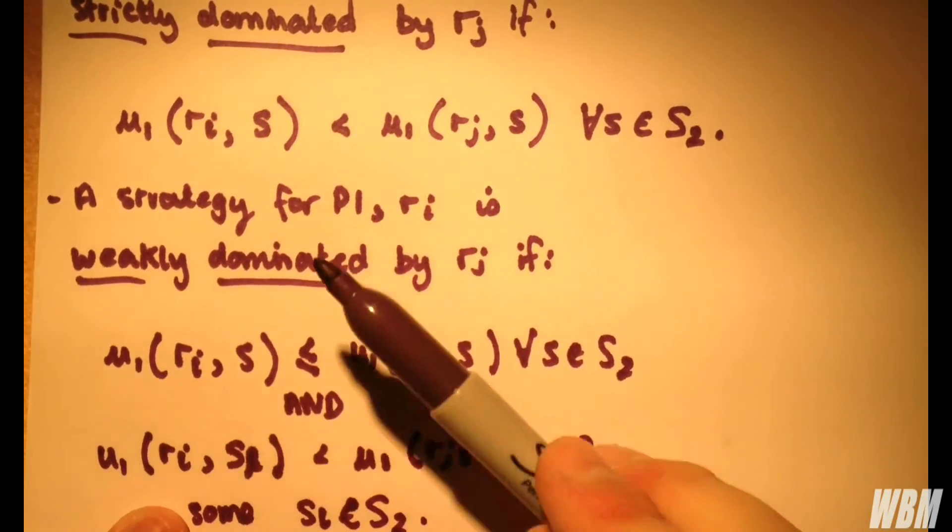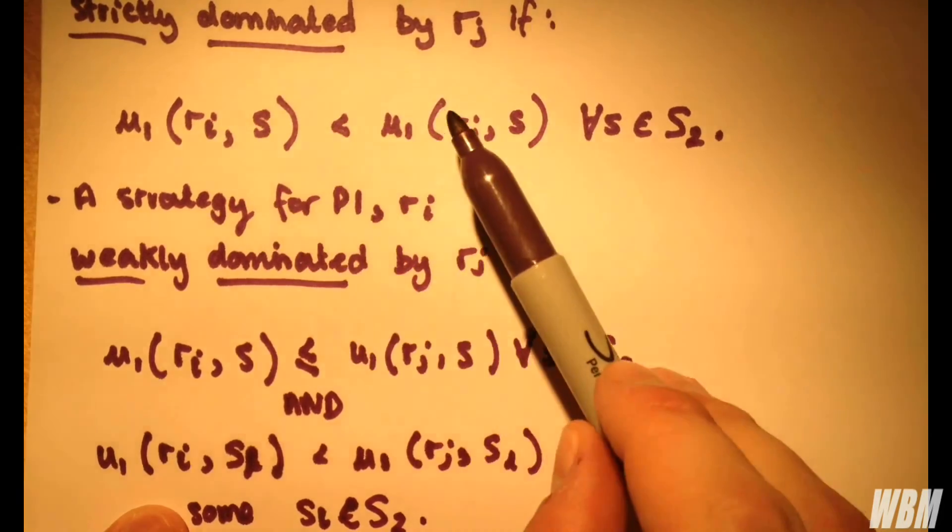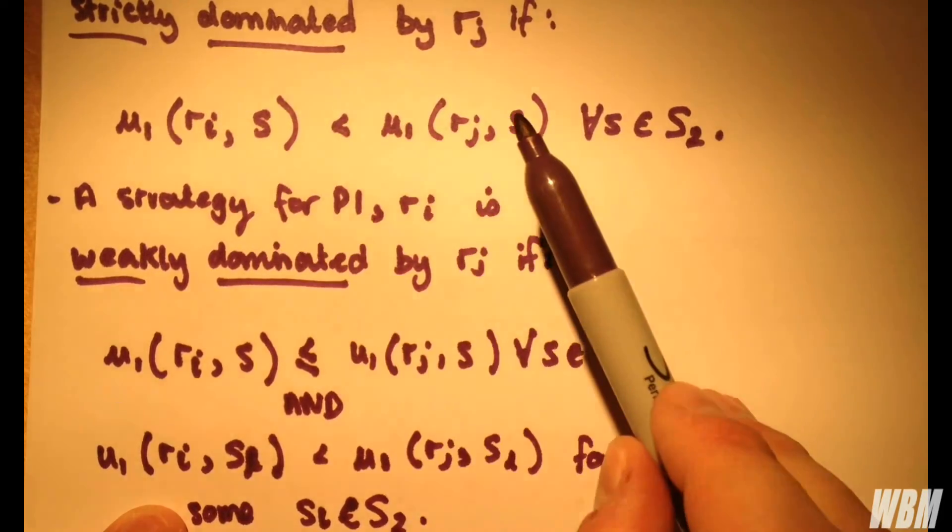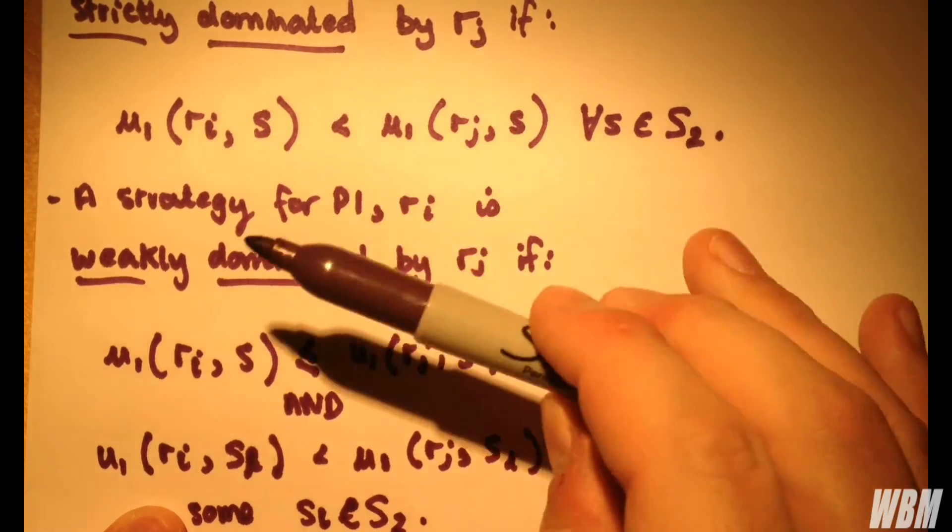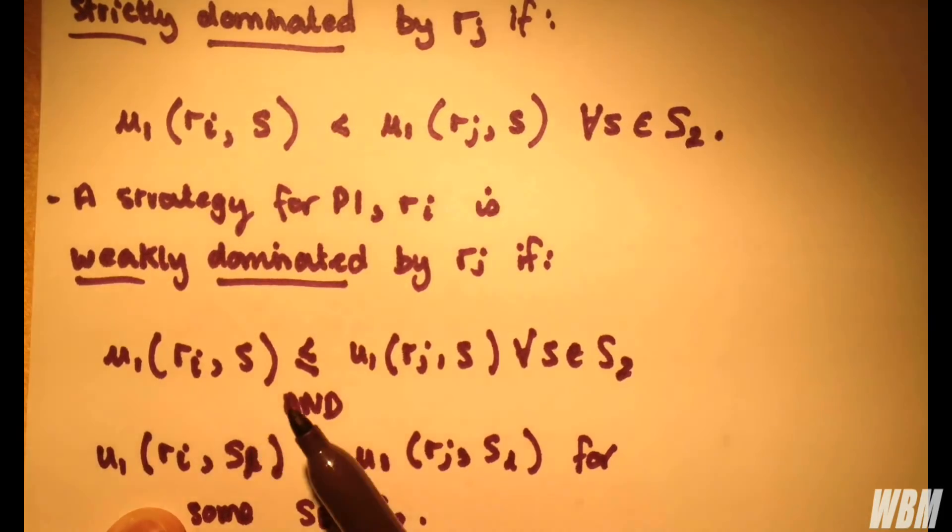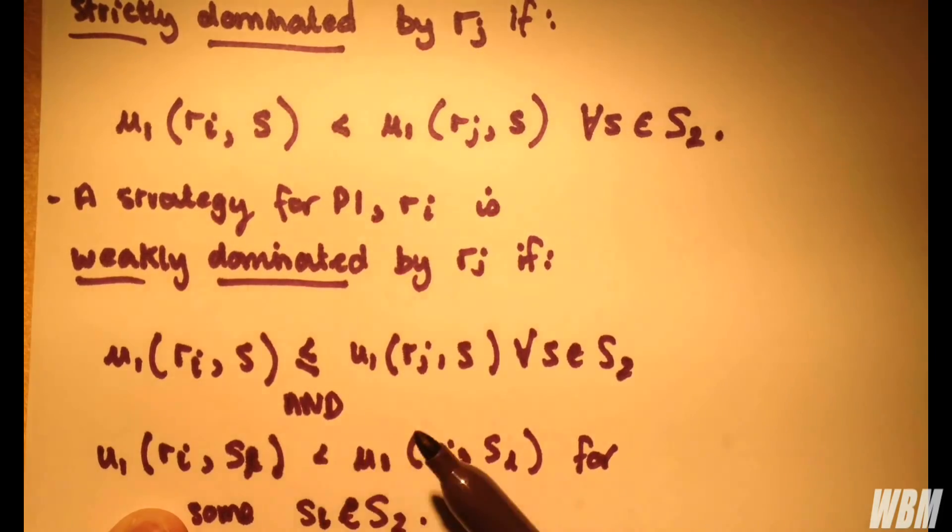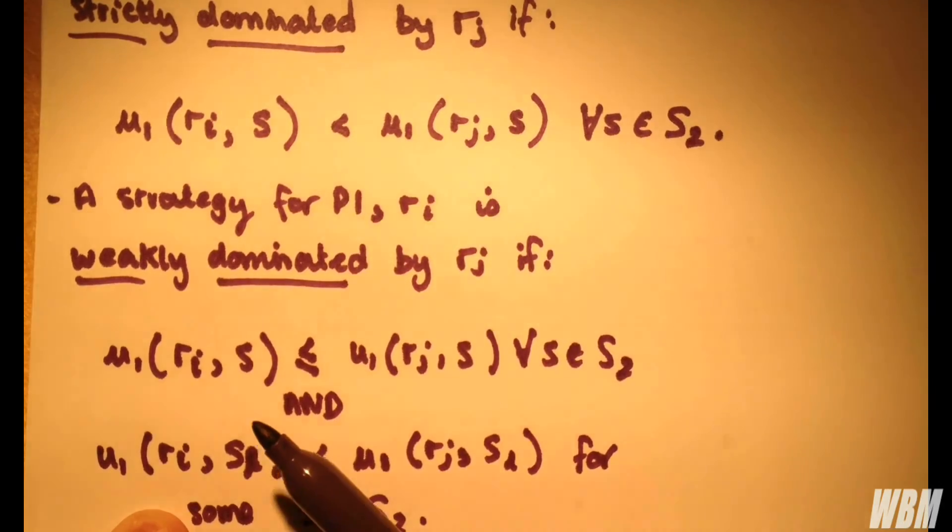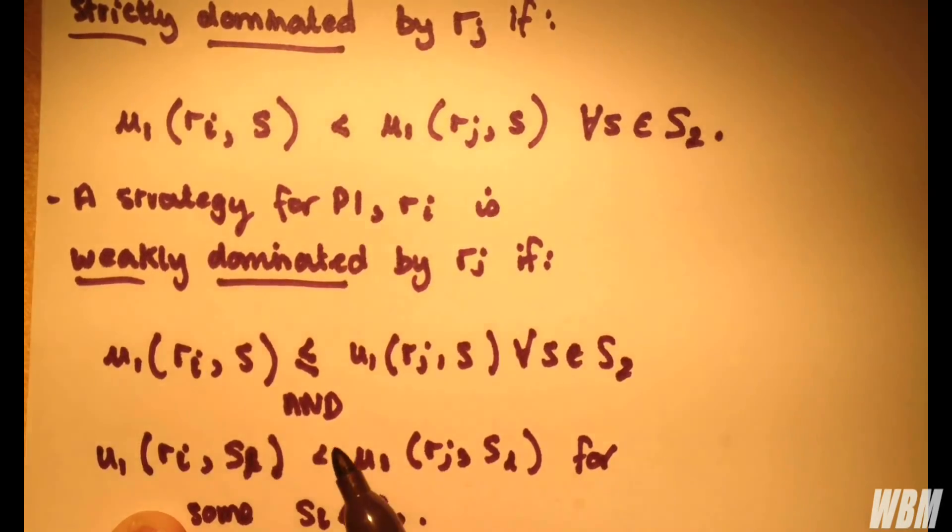So basically what we have here, strict dominance is when Rj is greater than Ri in every case of S, in every situation where you can compare Rj and Ri. However, if we have an equality, but we still have some value for which Rj is greater than Ri, then we have it weakly dominated. I think with this dominance, the best thing to do is see an actual visual example.